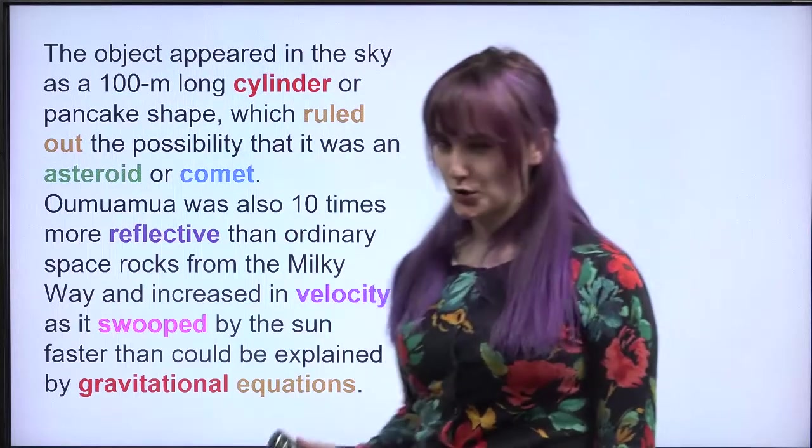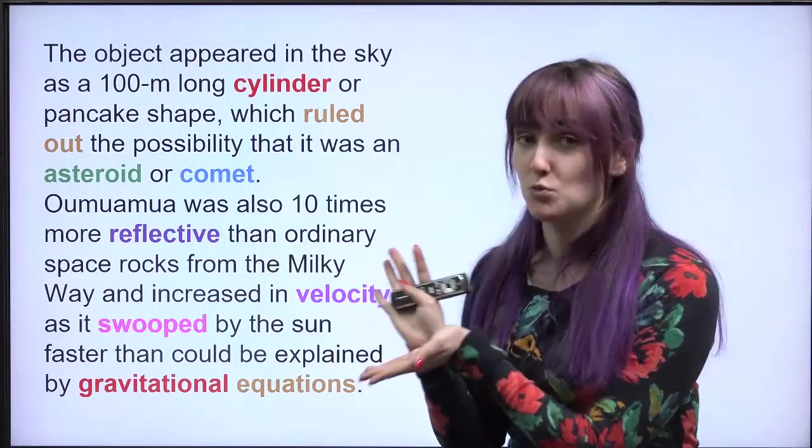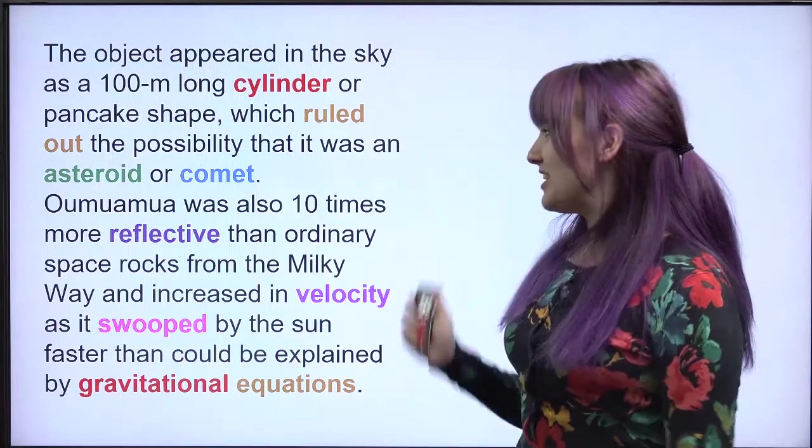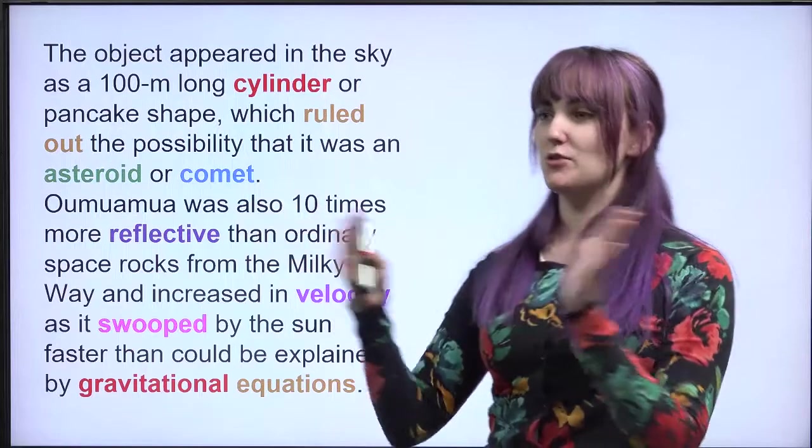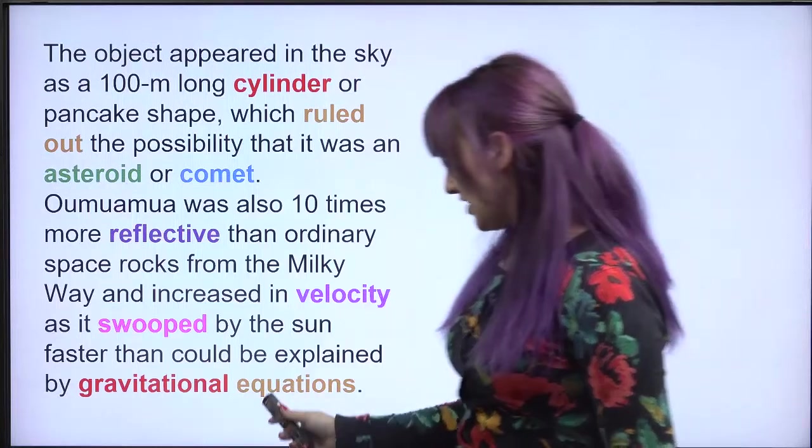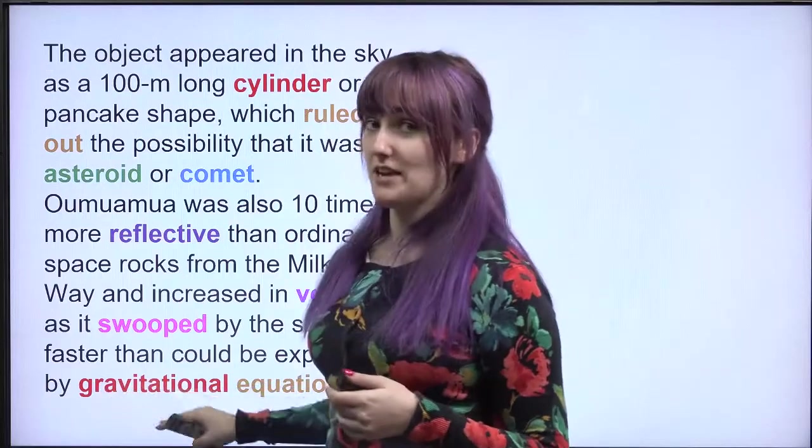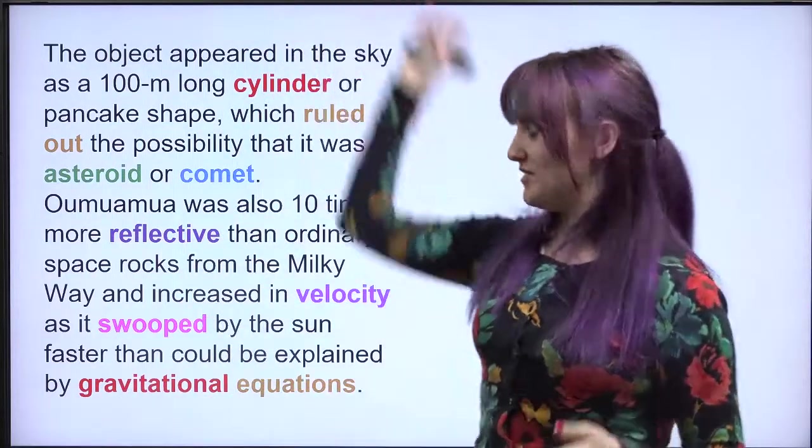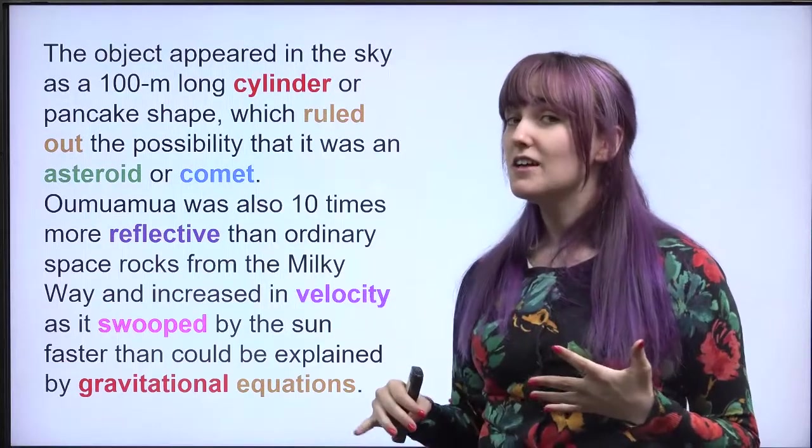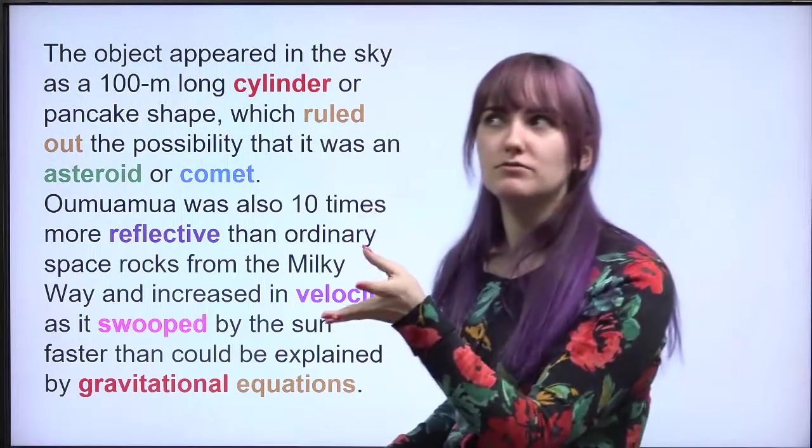Because of the shape, we know it's not an asteroid, we know it's not a comet. And then in addition to that, Oumuamua was 10 times more reflective. So it shone back 10 times more light than other types of space rocks from the Milky Way. And that's the galaxy that we live in. In addition to that, this Oumuamua thing increased in velocity, the rate of change in your speed, as it swooped or flew around the sun faster than could be explained by gravitational equations. These scientists use these super difficult mathematical formulas using the laws of physics and especially that of gravity, the thing that keeps us stuck to the earth so we don't fly off into outer space. These really smart scientists use a lot of different math equations to try to calculate the velocity or speed that this thing would be flying by the sun. But actually they were off by a lot, which means that the thing is probably not made of what we think it was made of.